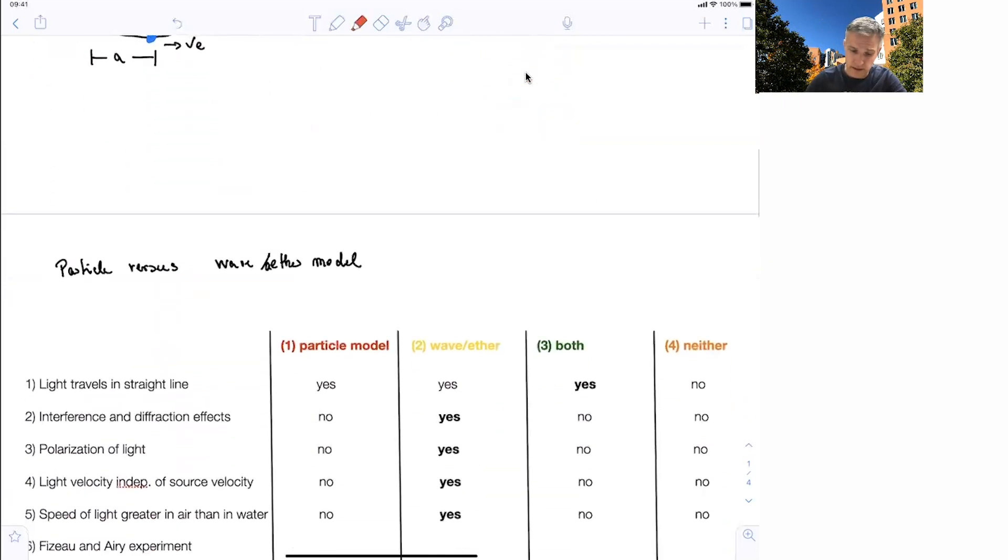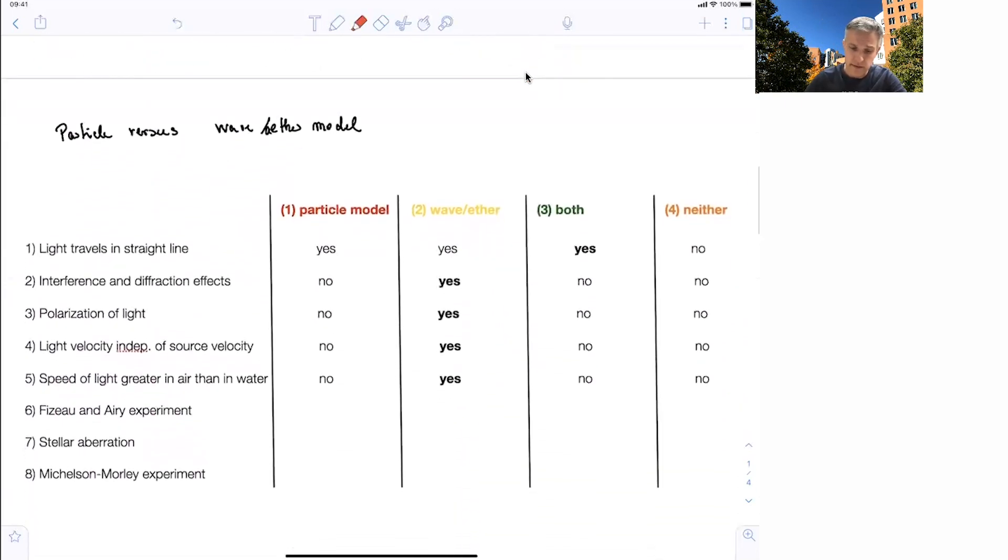So with this now, we can again do our ether versus particle nature model comparison. In our first discussion, we concluded clearly that the wave and ether hypothesis dominates or wins. But now we have studied at least two further experiments.